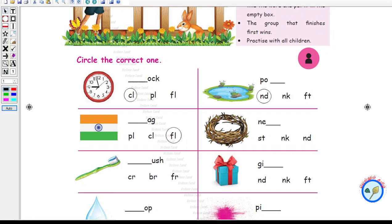What is this? This is a nest, a bird's nest. What is the spelling for nest? N-E-S-T. So let me circle S-T.